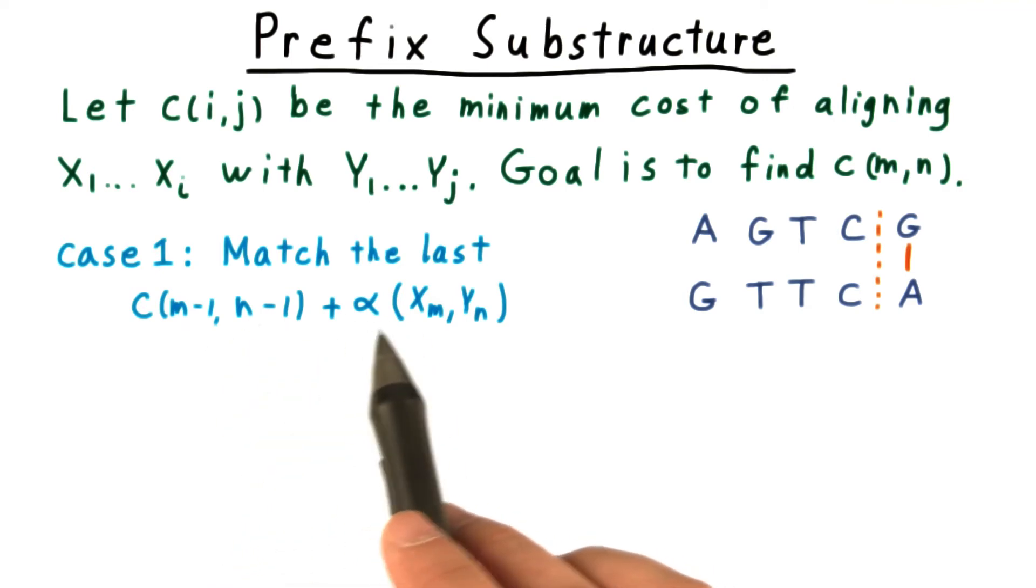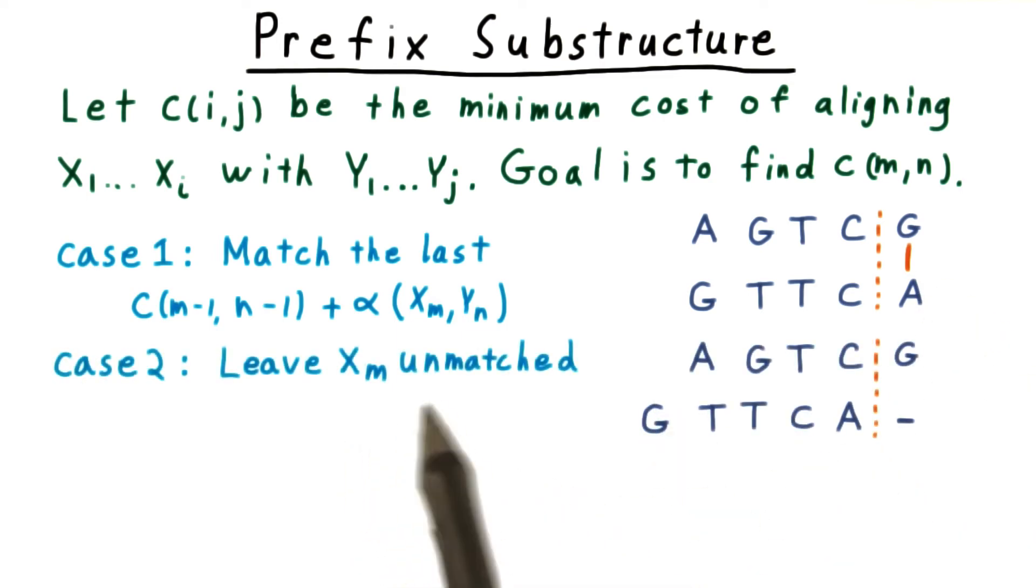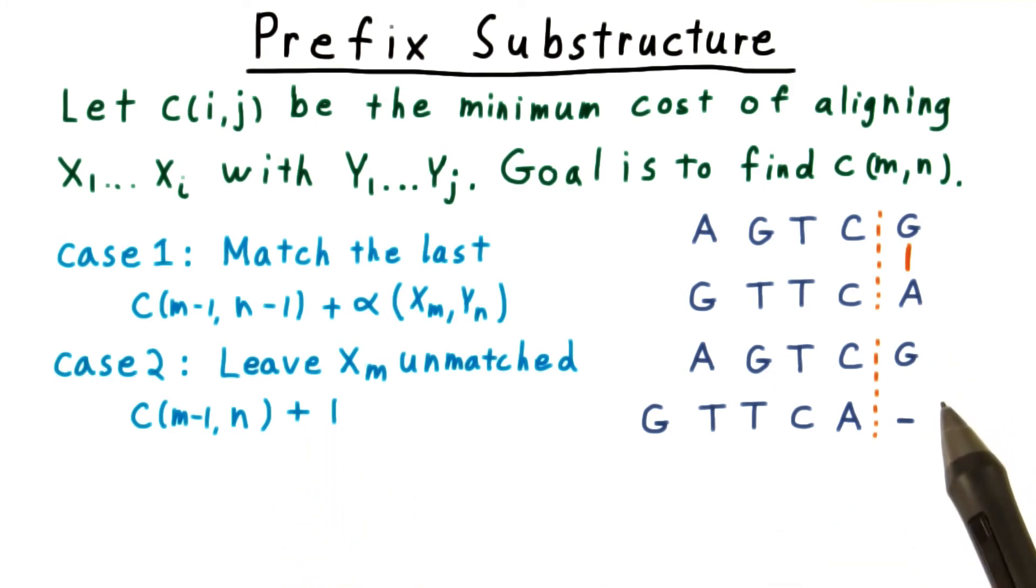Another possibility is that we leave the last character of the x sequence unmatched. Then the cost would be the minimum cost of aligning the first m minus 1 characters of x with the first n characters of y, plus 1 for leaving x sub m unmatched.